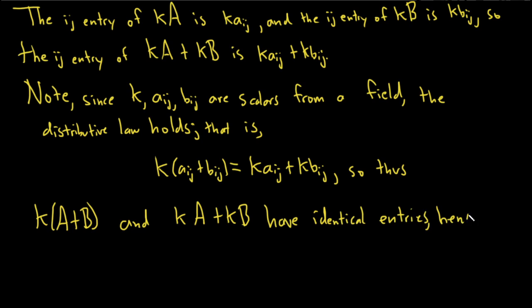Hence, they must be equal. So hence, we have that they must be the same matrix because all of their entries are the same. So k times A plus B is equal to kA plus kB.